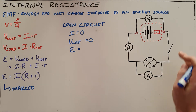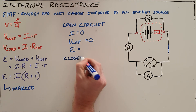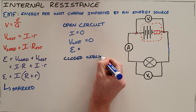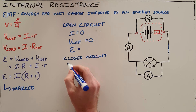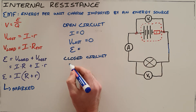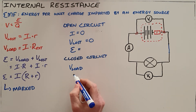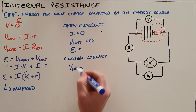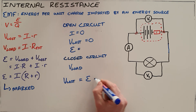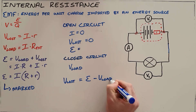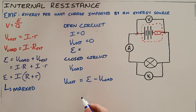When we close or complete the circuit, a current starts to flow. As current flows, there are a certain number of lost volts, and the voltage measured over the battery is no longer the EMF — it is then your V_load. The difference between the EMF and V_load equals the lost volts, which can be obtained by rearranging the equation.